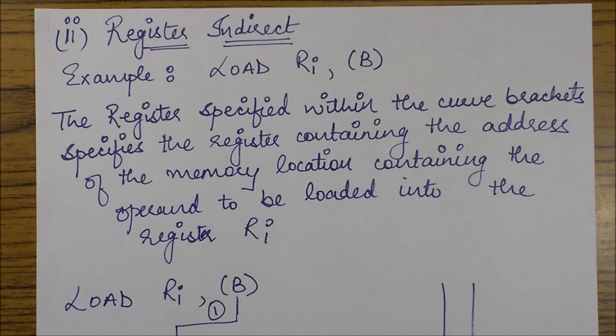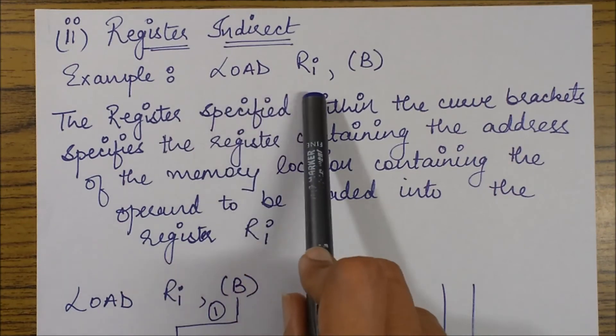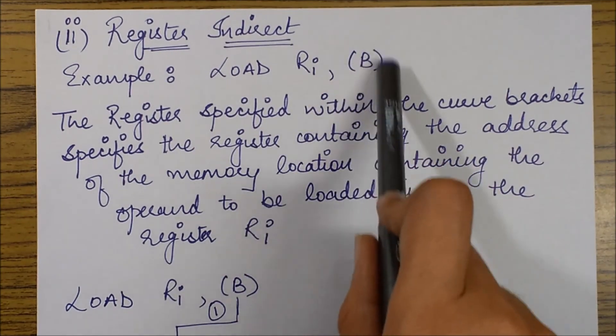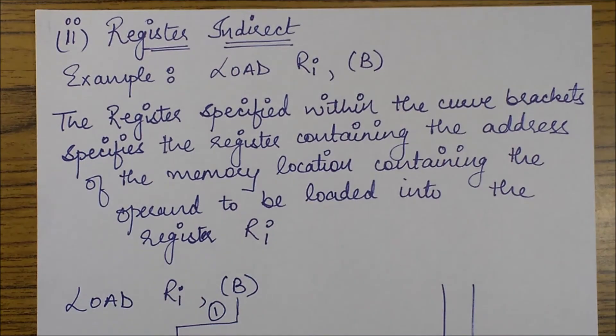So previously we saw about memory indirect operation and now we'll see how a register indirect addressing mode is different from that. So in case of a register indirect mode, a particular example says load Ri, (B register) enclosed within these curve braces.